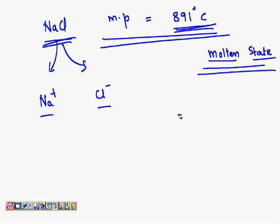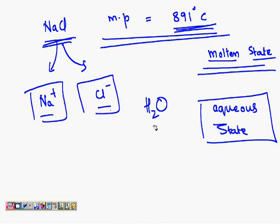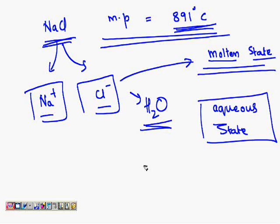You can also separate Na⁺ and Cl⁻ by dissolving NaCl in water. This state is known as the aqueous state. In molten state only Na⁺ and Cl⁻ ions will be there — remember, there will be no water in molten state. But when you dissolve it in water, Na⁺ and Cl⁻ also get separated because water molecules help in splitting them up. This state is known as the aqueous state.